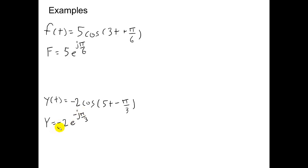You can rewrite this minus sign here as e to the j pi. Therefore, we can rewrite Y as 2e to the minus j pi over 3 times e to the j pi. Simplify this further and write Y as 2e to the j 2 pi over 3.